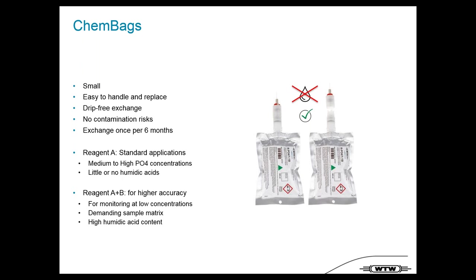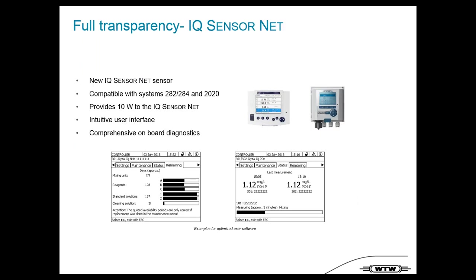ELISA PO4 can also eliminate humic acid interference. On IQ SensorNet it is fully transparent — it is compatible with all current IQ systems like a new sensor. New also is that ELISA provides 10 watts to IQ SensorNet, so in a small system no additional power supply is needed. We have integrated a completely new user interface with different tabs for settings, maintenance, actual status, and remaining chemical availability — very intuitive and simple.